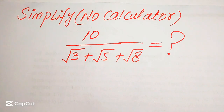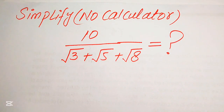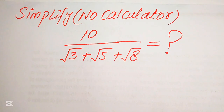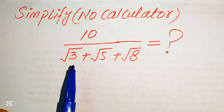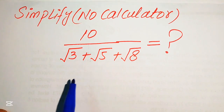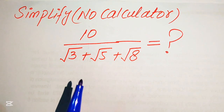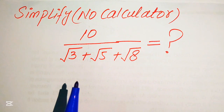Hello everyone. How to simplify this nice algebraic expression. So if we have 10 divided by square root of 3 plus square root of 5 plus square root of 8, we write this algebraic expression into the simplified form.